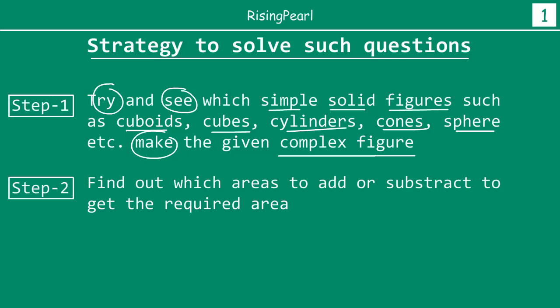The second step is to find out which areas have to be added or subtracted to get the required area. This is very important. Once we figure out that the given complex shape is made up of a combination of cuboids and cones, or cones and spheres, etc., we have to figure out which areas should be added or subtracted to get the required area.